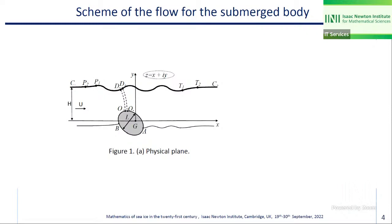A complex function has the same value at infinity regardless of direction. Because of this, we introduce damping regions p1, p2, t1, t2 — regions where we apply an additional term into the dynamic boundary condition which suppresses waves and makes the flow uniform at infinity.